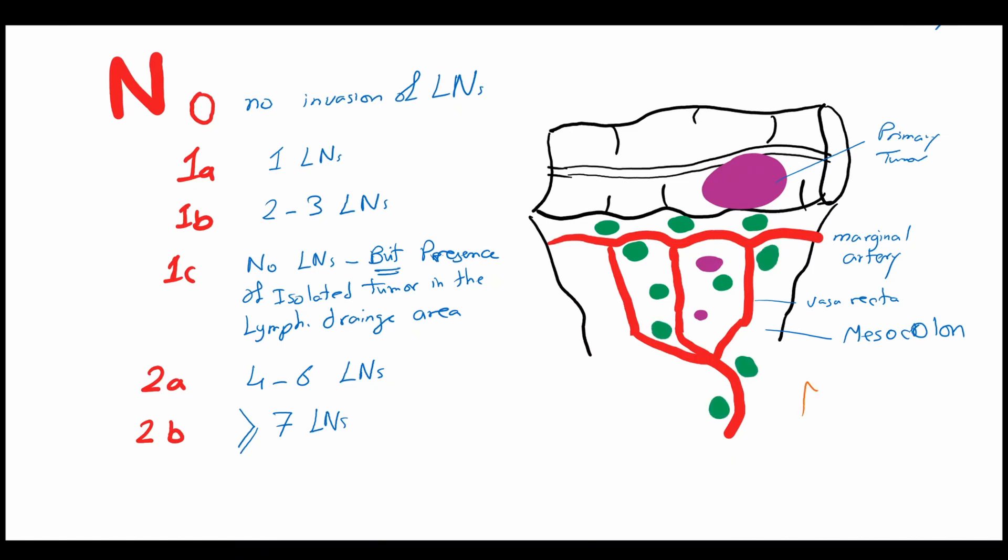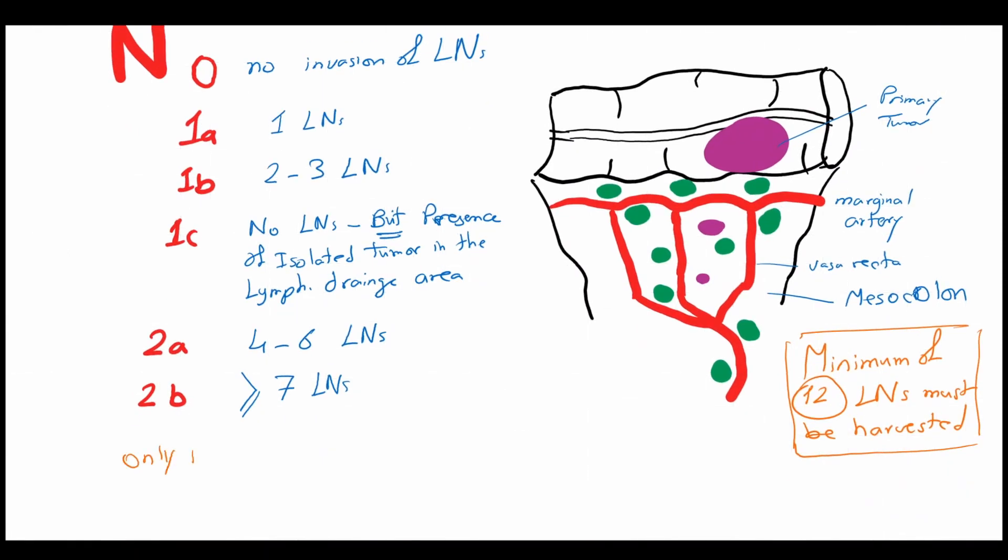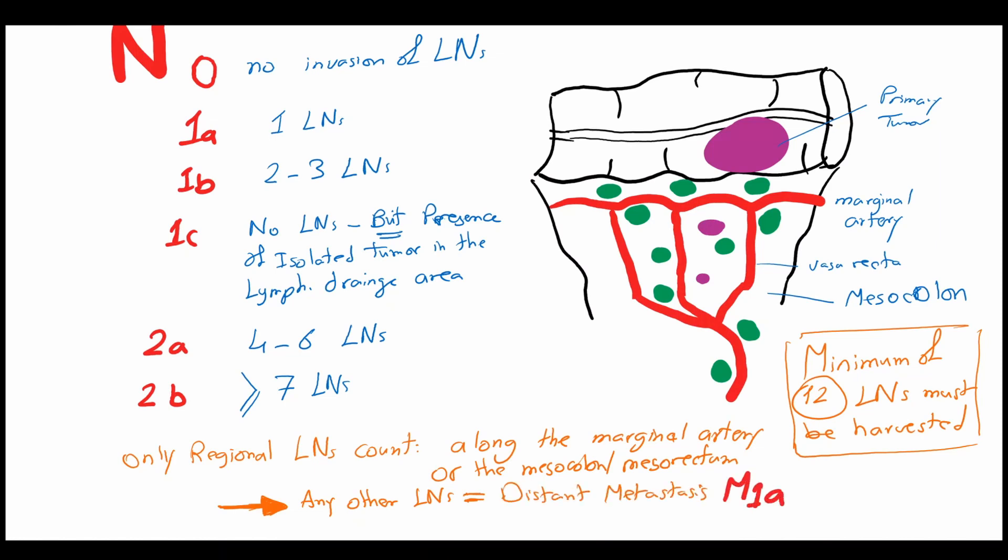Here we must notice that in order to perform an adequate end-stage estimation, a minimum of 12 lymph nodes must be harvested during the operation. Only regional lymph nodes count along the marginal artery or the mesocolon or the mesentery. Other than that, lymph node invasion is considered to be distant metastasis or M1a stage.